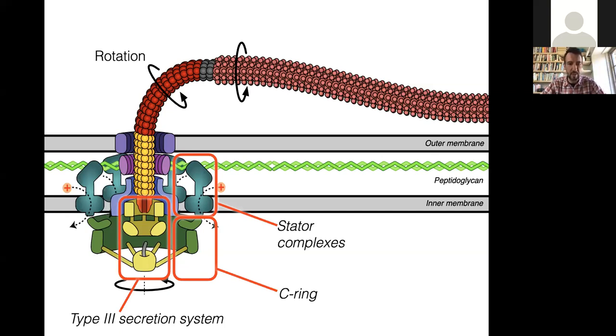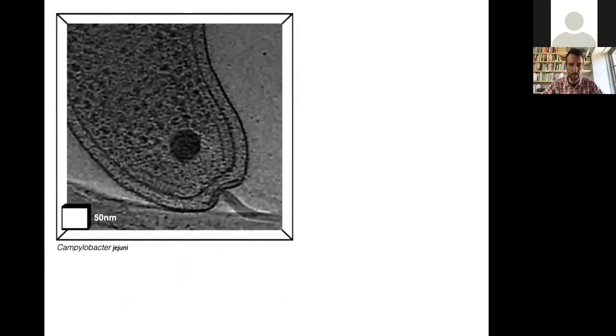Another key piece of machinery is what we call the type 3 secretion system. The type 3 secretion system is a large self-assembly apparatus that's embedded in the core of the bacterial flagella motor. So the technique we use is electron cryotomography to study these things.